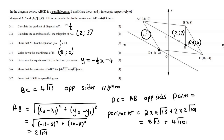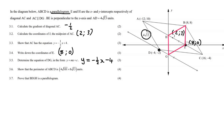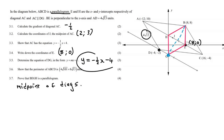The last question: prove that BEGH is a parallelogram. The easiest way is to use the midpoints of the diagonals — if both diagonals share the same midpoint, it's a parallelogram. You could use parallel sides or distances, but that's the longest way. I'll find the midpoint of BG. First, to get the coordinates of G, we make x equal to 0 in the equation of DG and get negative 4, so G is (0, negative 4).